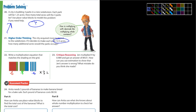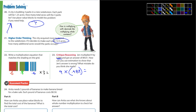Number 23: Jen multiplied 9 by 0.989 and got an answer of 89.01. How can you use estimation to show that her answer is wrong? Think about it — she multiplied 9 by a number that's just a little bit less than 1, so the answer should be a little bit less than 9. But she got 89 — she made a mistake somewhere. What mistake do you think she made? I'll let you figure that out.